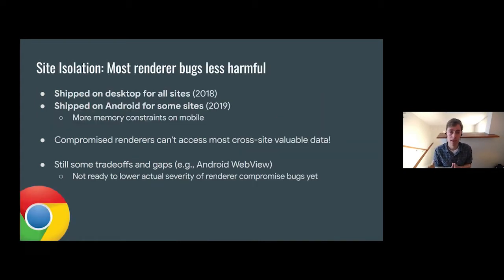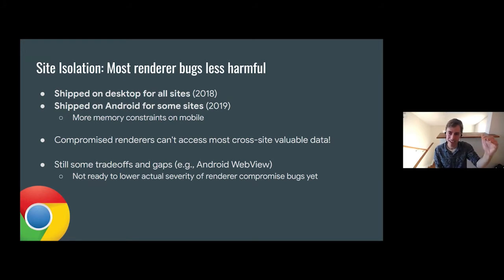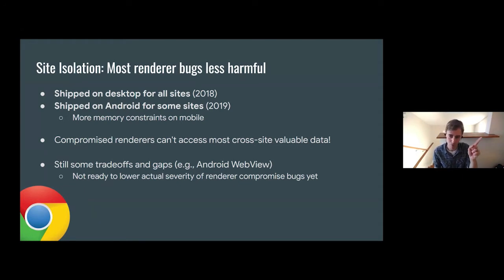We ended up being able to make renderer bugs a lot less harmful. We shipped site isolation on desktop for all sites in 2018, and a year later on Android for sites that users log into. We're a little more constrained by memory on those platforms, but we're hoping to increase coverage there. This means that a fully compromised renderer has a much harder time accessing cross-site valuable data. We have our eyes on the goal of actually lowering the severity level for renderer compromise bugs from high to medium — we're not quite there yet, but we're hopeful.